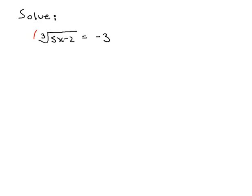We'll raise each side to the third power and you can see that doing so will eliminate the radicals, so we will be left with 5x minus 2 is equal to negative 27. Adding 2 to each side, 5x is equal to negative 25, so x equals negative 5.